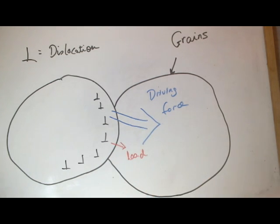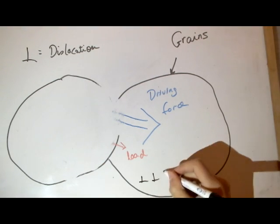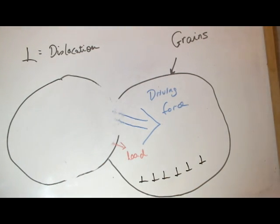The bigger the grain, the bigger the pileup, and therefore the bigger the force. In large grains, a relatively small load added with this force will cause the dislocations to move to the next grain.